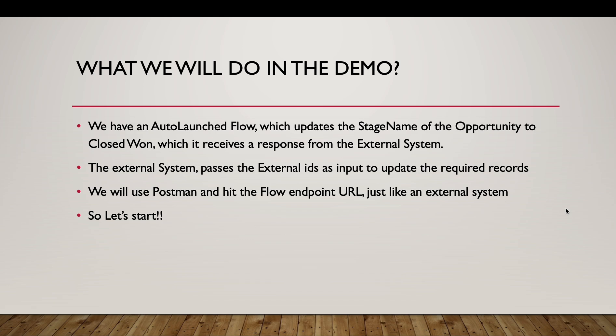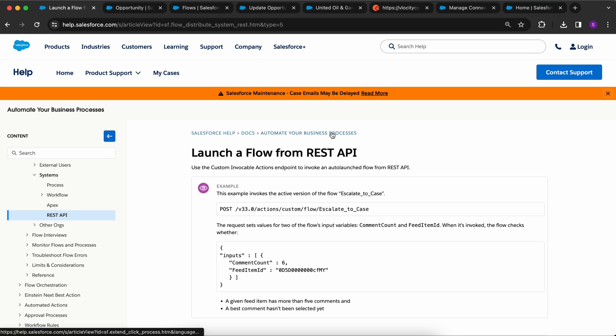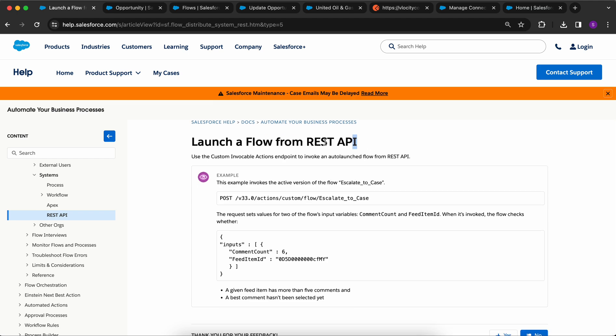The external system will pass external IDs of the opportunity as input, which are required to update those opportunity records in Salesforce. We will have an external ID field — I'll show you that shortly. We will use Postman and hit the flow endpoint URL just like any external system. If you've watched my previous video where we call an integration procedure using Postman, this is somewhat similar — you can think of a Salesforce flow like an integration procedure.